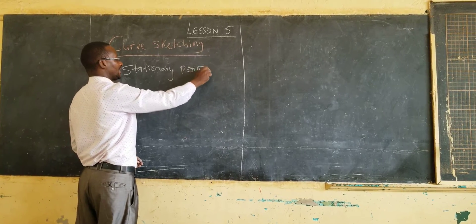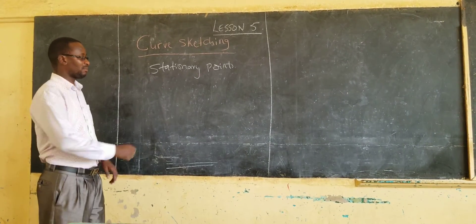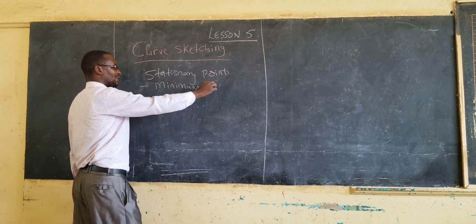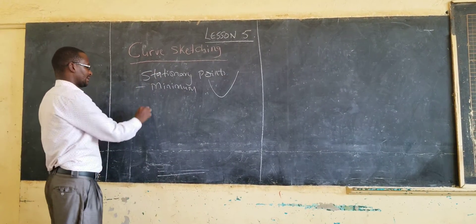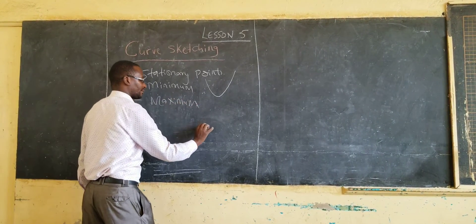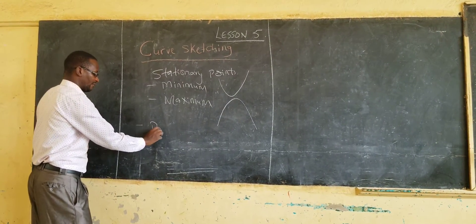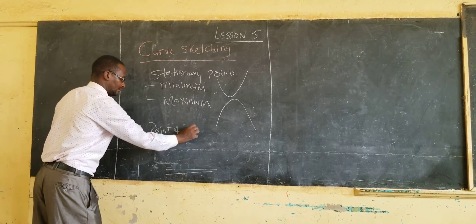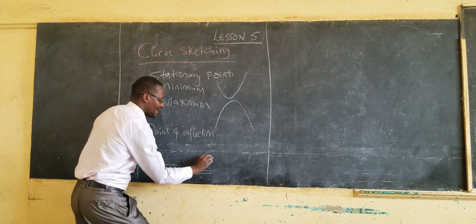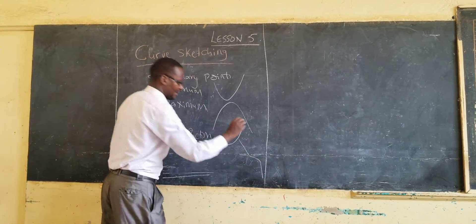We also learned about the nature of stationary points. A stationary point can be a minimum — like a trough — it can be a maximum, like a hill, or it can be a point of inflection, which is either increasing or decreasing.